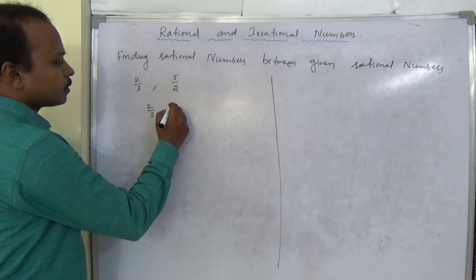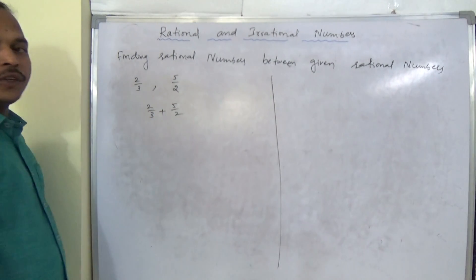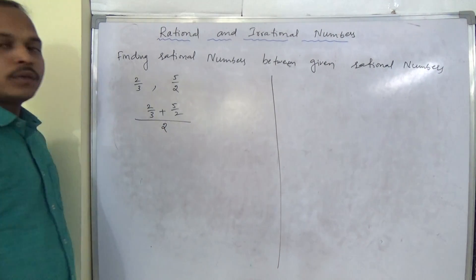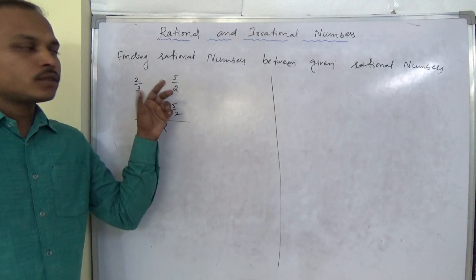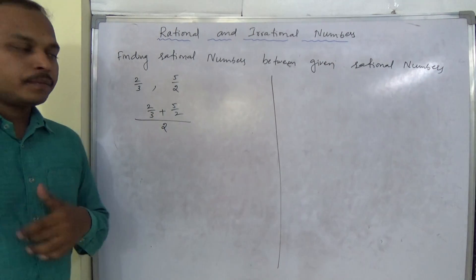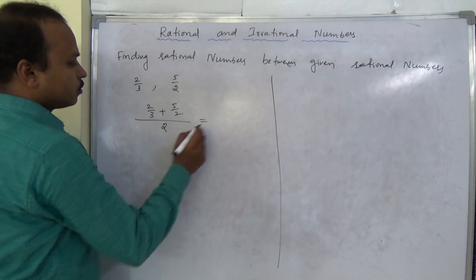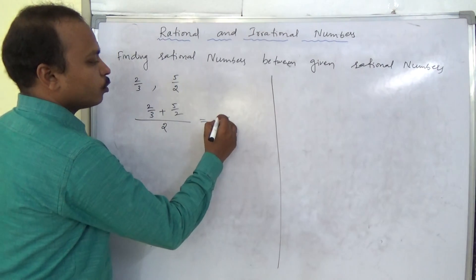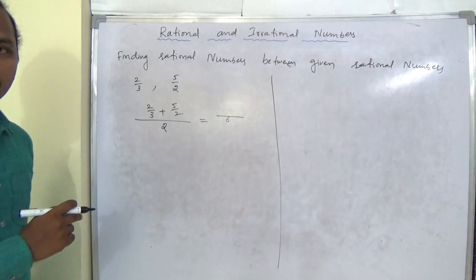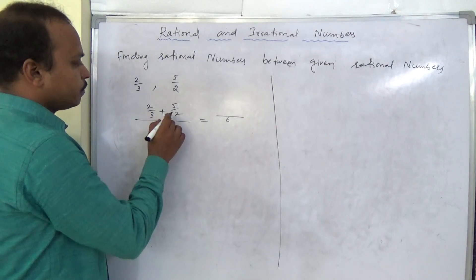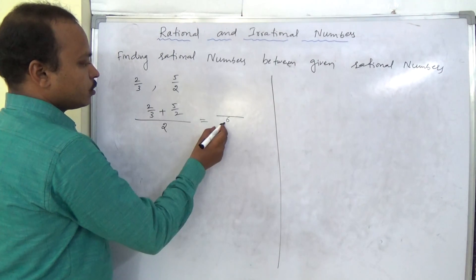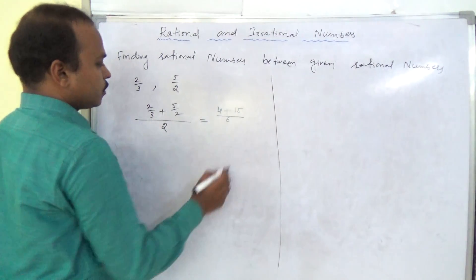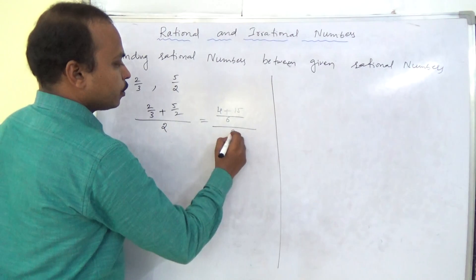So, 2 by 3 plus 5 by 2. We need to add both. For the numerator part, LCM is 6. 3 goes into 6 two times, giving 4; 2 goes into 6 three times, giving 15. So we get 4 plus 15 by 6, which is 19 by 6. Then we divide by 2.